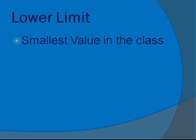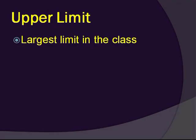A lower limit is the smallest value in the class. An upper limit is the largest value in the class.